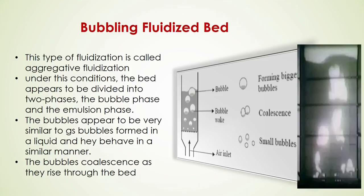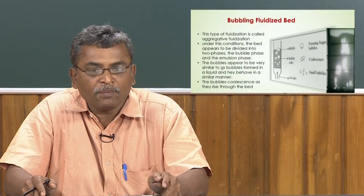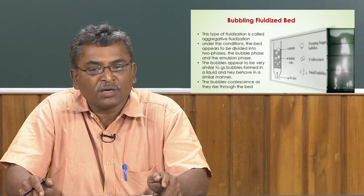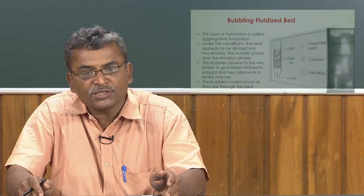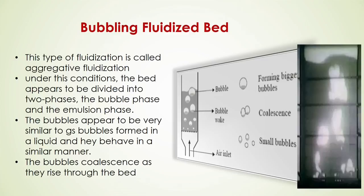In a bubbling fluidized bed, aggregation of phases occurs, creating a gap between solid particles and forming bubbles during gas distribution through the distributor. Under this aggregative or bubbling fluidized bed condition, the bed appears divided into two phases: the bubble phase and the emulsion phase. The bubbles appear very similar to gas bubbles formed in a liquid and behave in a similar manner.